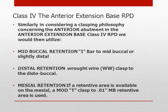Similarly, in considering a clasping philosophy concerning the anterior abutment in a Class 4 RPD, we would utilize the I-bar to mid-buccal or slightly distal. If the retention is distal, a wrought wire clasp to the disto-buccal may be used. If a retentive area is available on the mesial, a modified T-clasp to a 0.01 mesial buccal retentive area may be used.